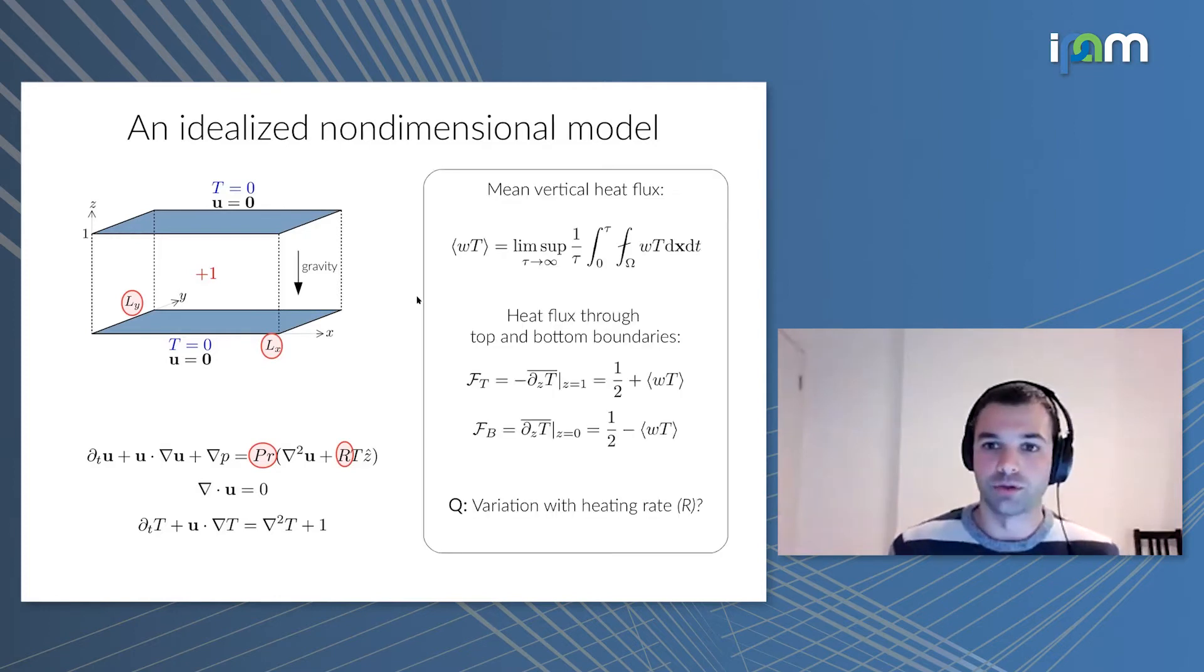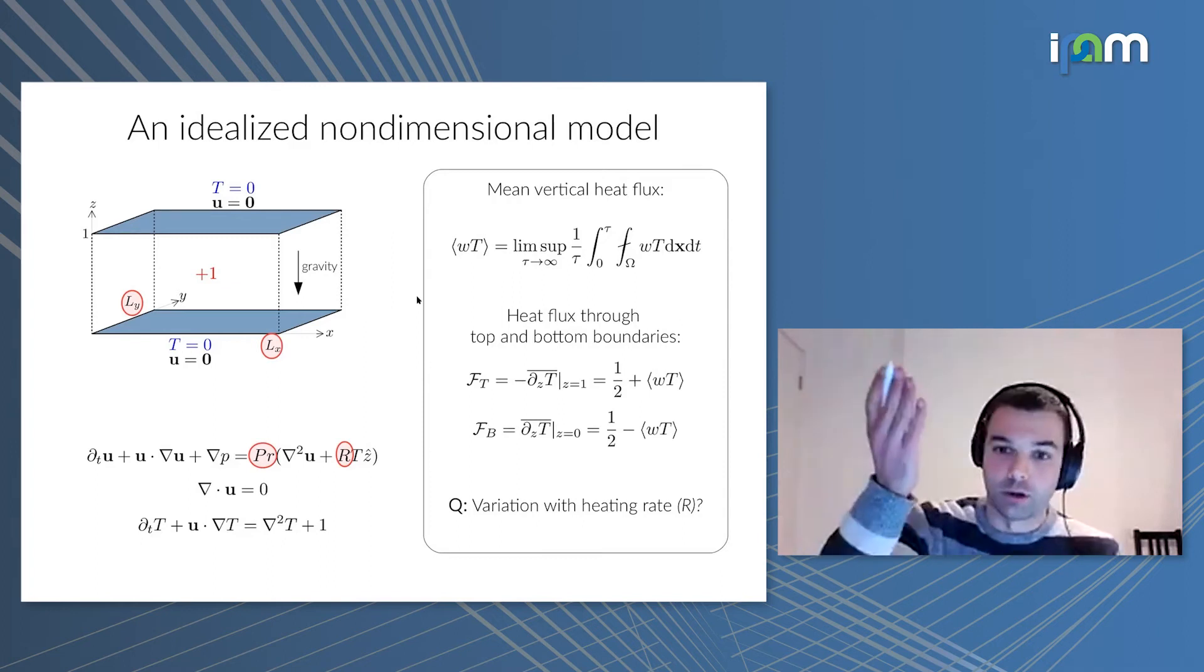With this setup, the quantity I want to focus on is the mean vertical heat flux through the layer. This turns out to be exactly the same as the convective vertical heat flux, which is an average of wT, where w is vertical velocity and T is temperature. This quantity is related to the heat flux through the top and bottom plates. On average, the fraction of heat we add that goes out the top, which is the mean vertical gradient of temperature, is a half plus the mean convective heat flux. Similarly, the heat leaving through the bottom is a half minus the vertical heat flux. When we have convection and this flux is positive, the flow is asymmetric and more heat leaves through the top than through the bottom.